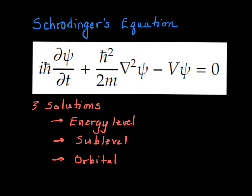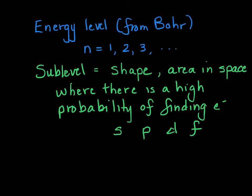The first is called the energy level. The second gives us a sublevel. And the third gives us the orbital. So the energy level is that same energy level from Bohr, n equal to 1, 2, and 3.